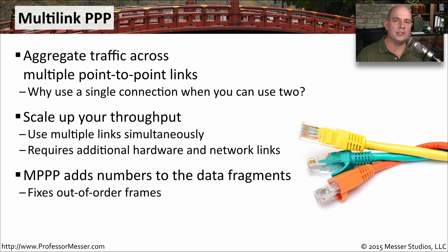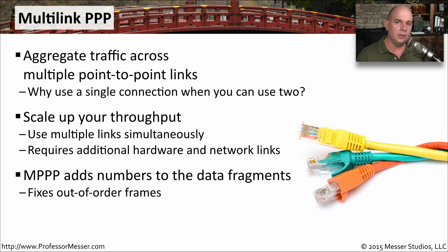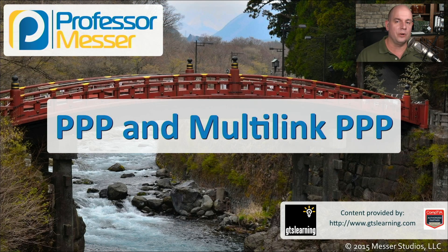Whenever you're working with a technology that has multiple links going from one place to another, one of the challenges is keeping everything in the right order. When you send information through these multiple links, sometimes the frames will come out out of order on the other side. In networking, everything needs to be received in the exact same order that it was sent. With multi-link PPP, a numbering system is included when the data is sent over the link, and on the other side, as the data is being put back together, the multi-link PPP connection examines that number and determines if anything is out of order, then switches things around so all data received is in the exact same order as when it was sent.